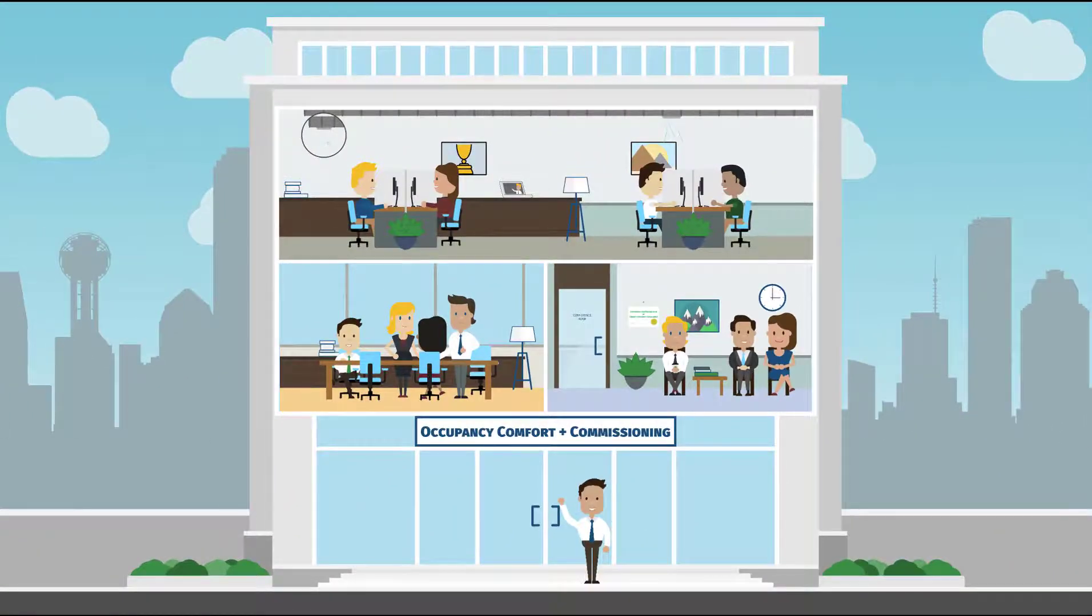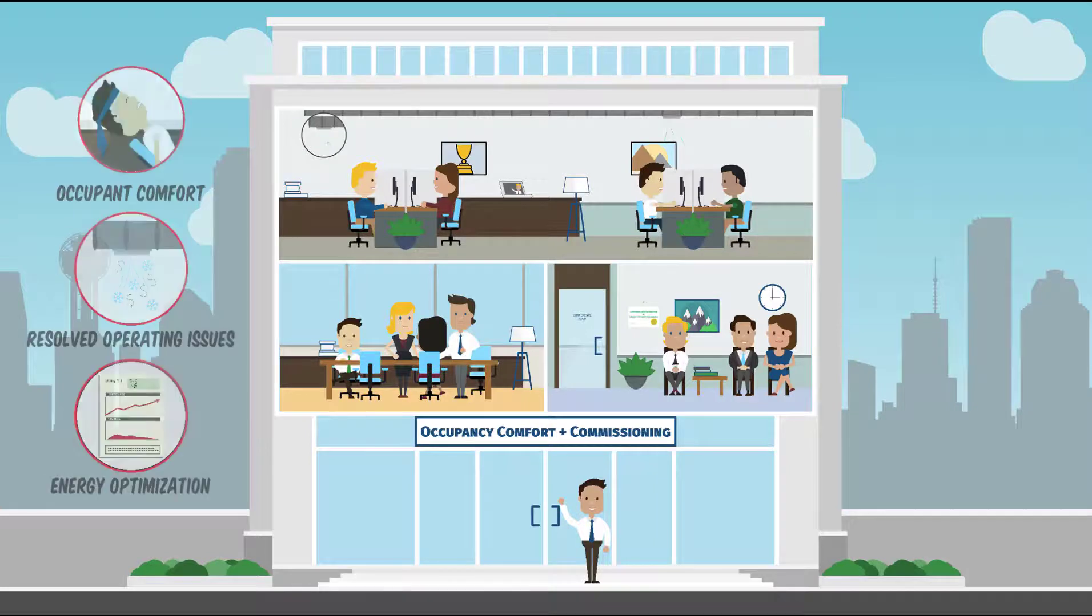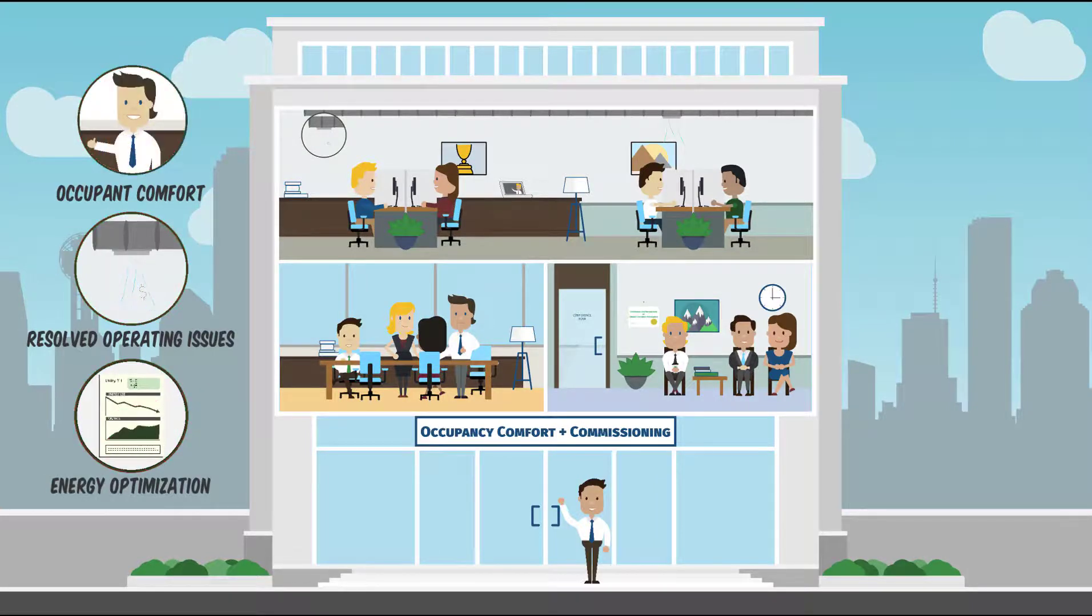Command commissioning takes a team approach to resolving facility operating issues. We take a systematic approach of identifying the root cause of comfort problems, from zone equipment all the way back to the central plant.